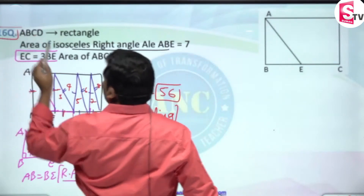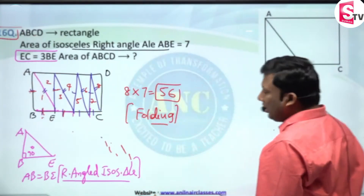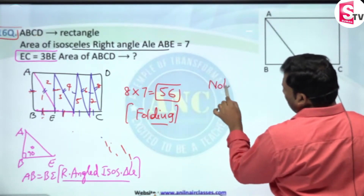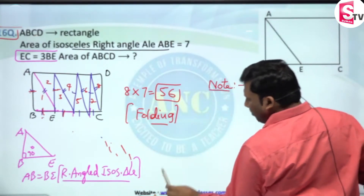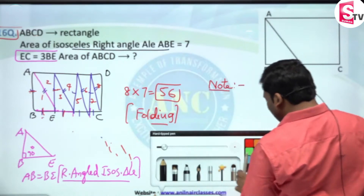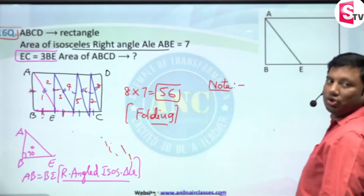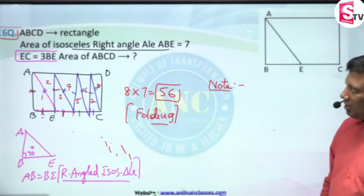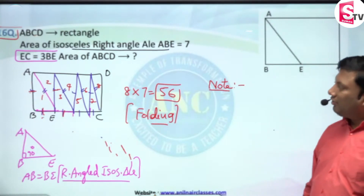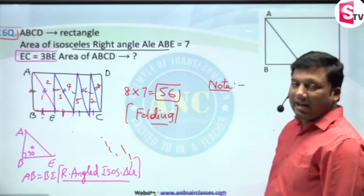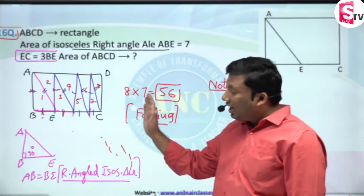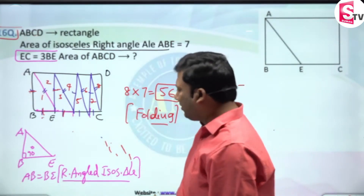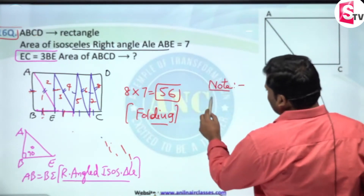I hope question 16 is very very clear. Very very important note — please write this down: each and every question should teach you a concept. Total area of the rectangle: there are 8 right-angled triangles, each with area 7, so 8 sevens are 56.